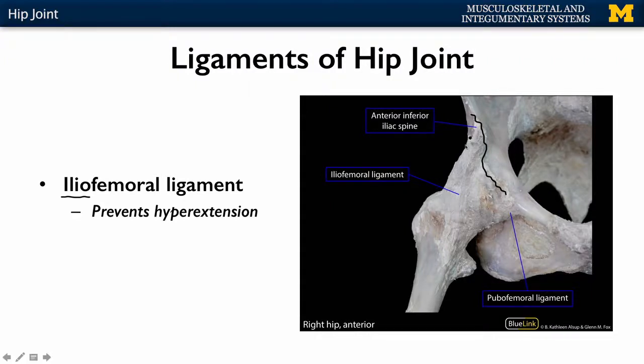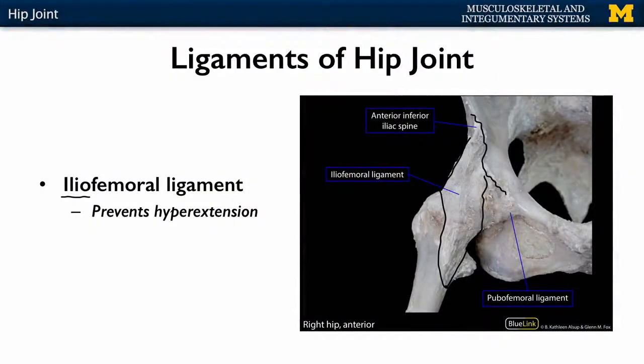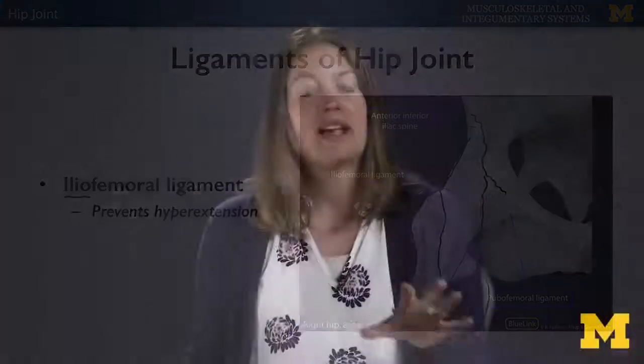This is a fairly expansive ligament and really plays a big role in not allowing the hip joint to hyperextend too far. There's quite a bit of range of motion past anatomical position, but this ligament really acts as a check for that. There are two other important ligaments in this area: the pubofemoral and the ischiofemoral, attaching to the pubis and ischium respectively, and they play a similar role in checking the hip joint and limiting range of motion.